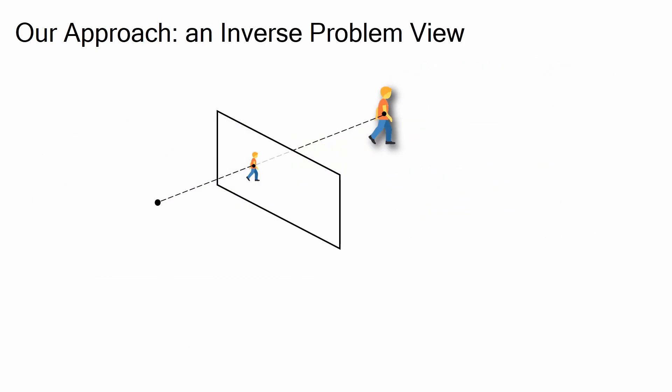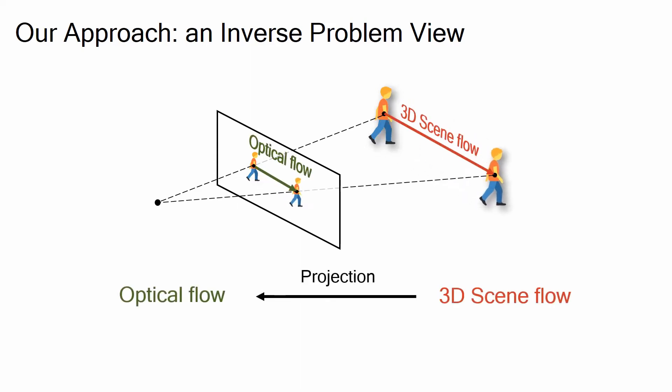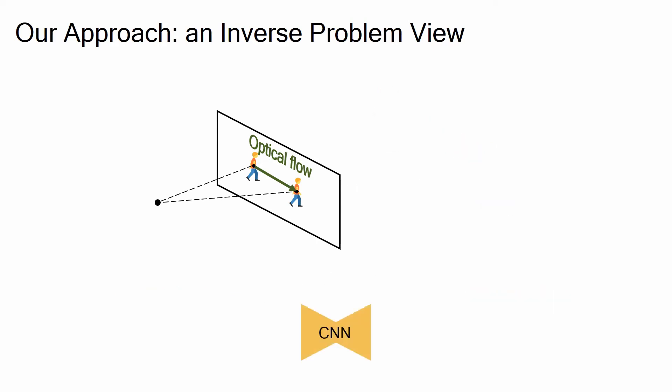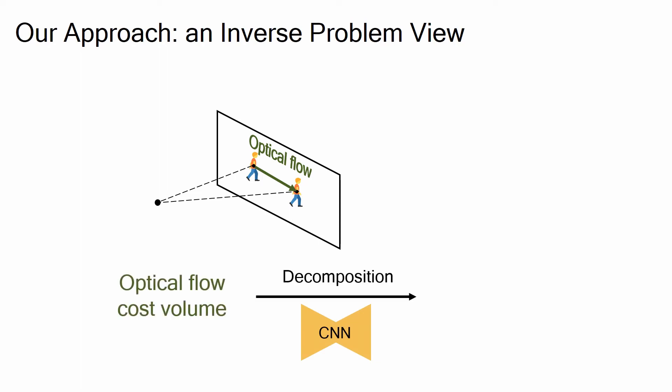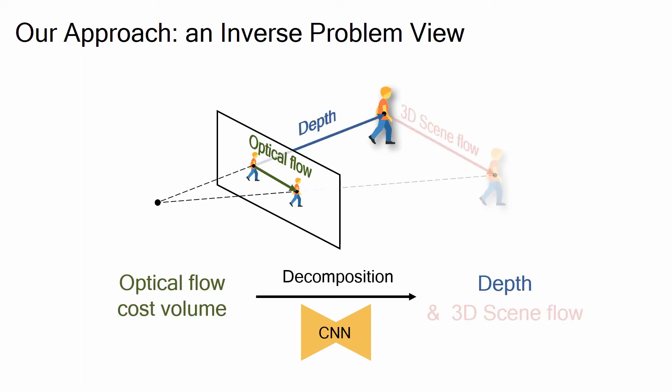To solve this highly ill-posed problem, we take an inverse problem view. Our starting point is that optical flow is the 2D projection of 3D scene flow. By taking an inverse view, we design a single convolutional neural network that decomposes a 2D optical flow cost volume into 3D points and their 3D scene flow simultaneously.